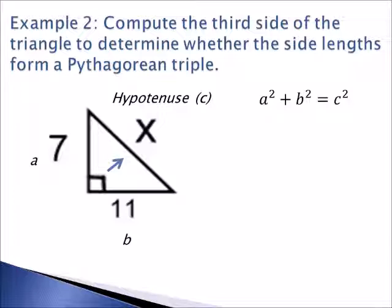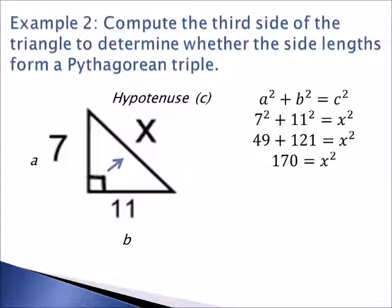So here we take our Pythagorean theorem, a squared plus b squared equals c squared, and we substitute in our values to get 170 equals x squared.